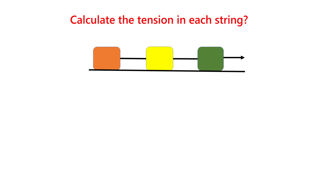Hello friends. Here I have an interesting problem for you, and by this problem you will learn how to find tension in a string. We have three blocks: this block has a mass of 5 kg, the yellow one has a mass of 8 kg, and the green one has a mass of 2 kg. These three blocks are connected through a string, and a force of 300 Newton is applied to block C. So let us call this block A, this is B, and this is C.